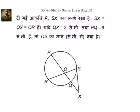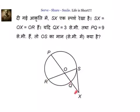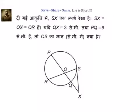In the given problem, we have SX is the tangent to the circle at S, and SX equal to OX equal to OR. Given to us that QX equal to 3 and PQ equal to 9. We have to find out what is the value of OS. Let us first try to find out what concept we have to use to solve this problem.